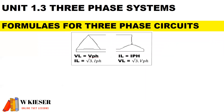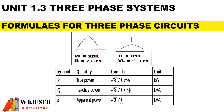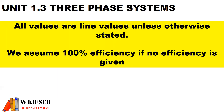The formulas for three-phase circuits: for delta, VL equals V-phase; for star, IL equals I-phase. When working with three-phase formulas, multiply by square root 3. All values are line values unless otherwise stated, and assume 100 percent efficiency if no efficiency is given.